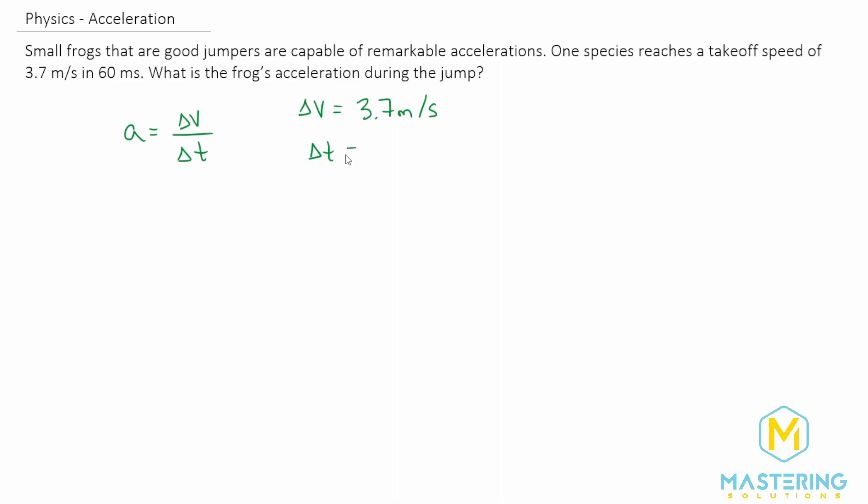The delta T, same thing, is starting the time from when it's jumping, so it's starting from 0. So 60 milliseconds is going to be our delta T.